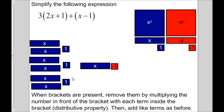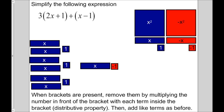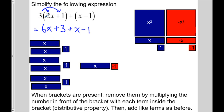Now we're going to rearrange them according to their shape. Here we have 6 of these x's, and here we have 3 plus 3 for the ones, then plus x and minus 1. If you're savvy, you'll notice this is exactly like the distributive property — 3 times 2 makes 6, 3 times 1 makes 3. There's an invisible 1, so 1 times x is x and 1 times negative 1 is negative 1. So we just did the distributive property without actually doing it.